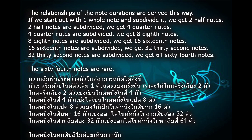The relationships of the note durations are derived this way. If we start out with one whole note and subdivide, we get two half notes. Two half notes are subdivided, we get four quarter notes. Four quarter notes are subdivided, we get eight eighth notes.